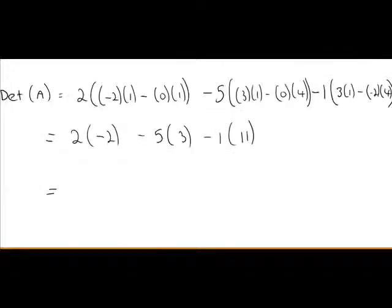That gives us minus 4, minus 15, minus 11. So, minus 4 minus 15 is minus 19. Minus 11 gives us a total of minus 30. So, the determinant of the 3 by 3 matrix we started with is minus 30.